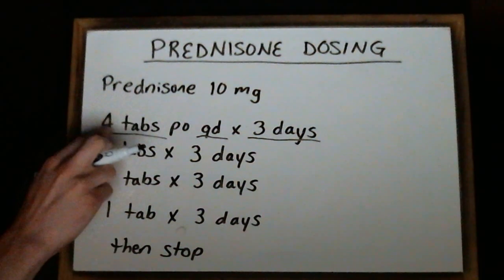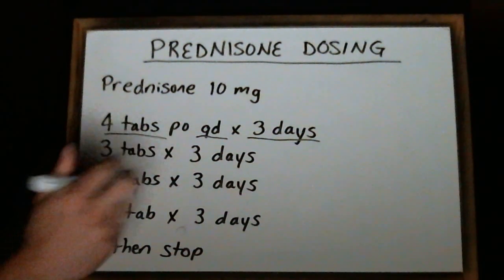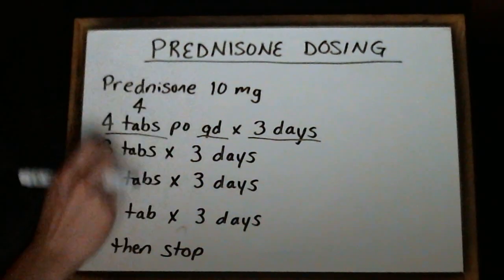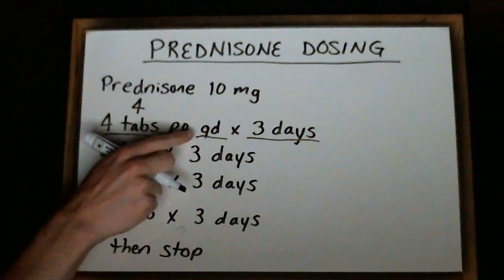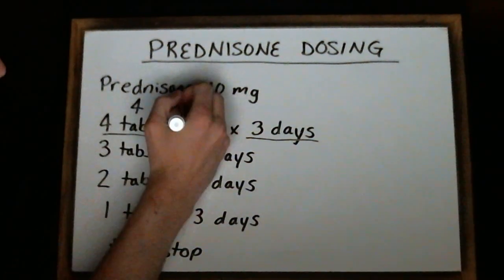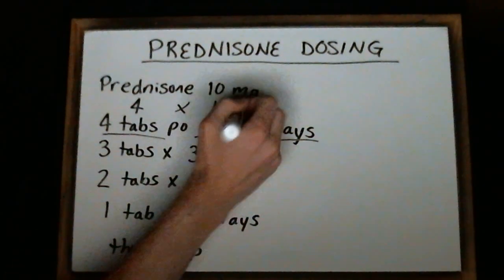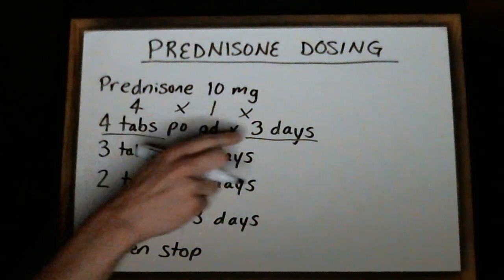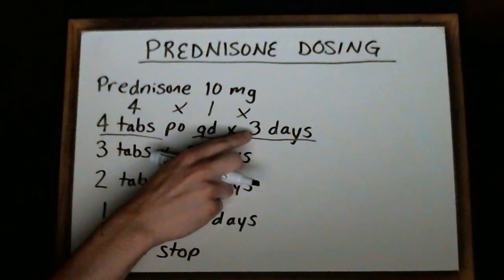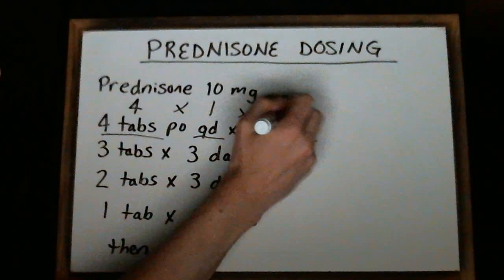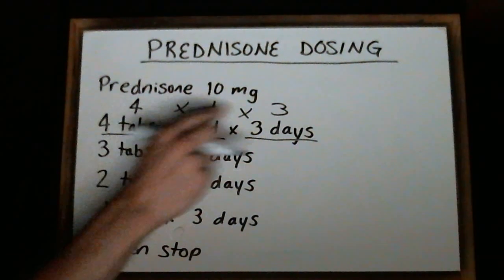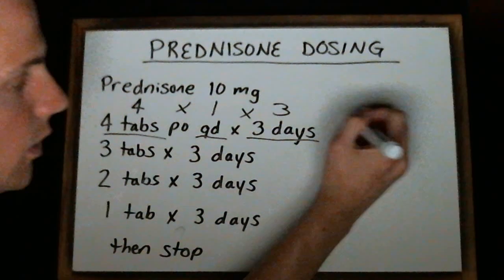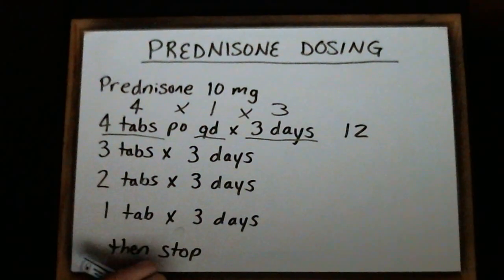In this case we have four tablets. We're going to multiply by one because it's once a day, then multiply by three for three days. So we take four times one times three, and we get 12. For this first line, we're going to need 12 tablets.